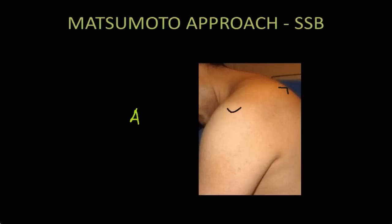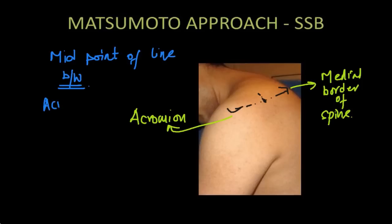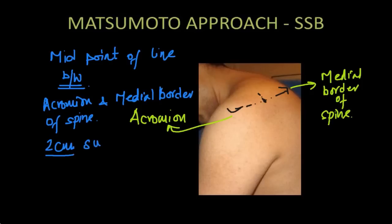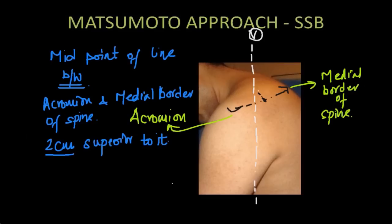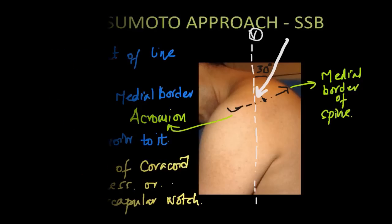In Matsumoto's approach the patient is sitting with the neck flexed. You palpate the posterolateral edge of the acromion and the medial border of the spine, combine these two lines, then choose a point which is the midpoint of the spine of the scapula and choose another point two centimeters cranial to it — this gives you your needle entry point. You use the same 100 millimeter insulated short bevel needle, directing it about 60 degrees in the parasagittal plane, hoping to hit the base of the coracoid process or the suprascapular notch, and then deposit your local anesthetic there.